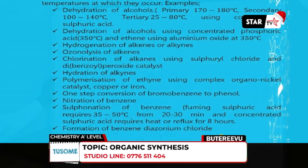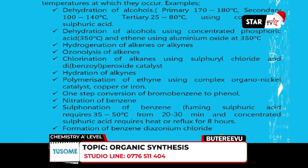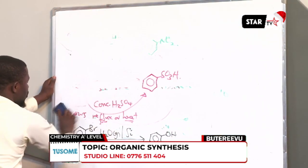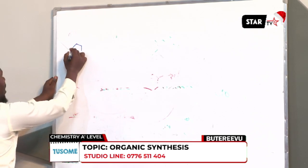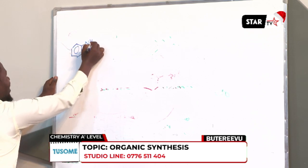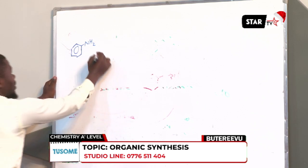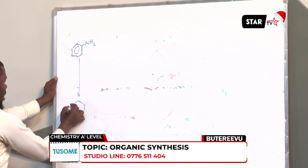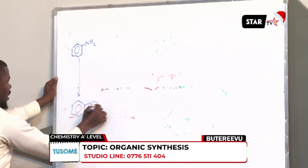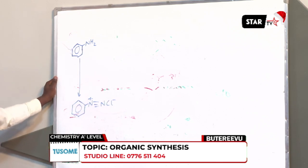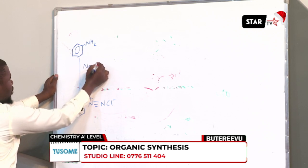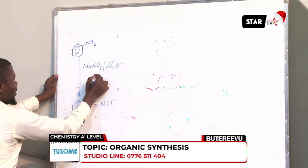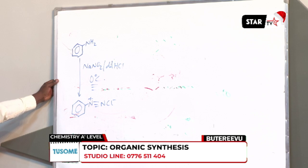The other temperature-specific reaction involves formation of benzene diazonium chloride. If you want to form benzene diazonium chloride, you will use aminobenzene — also called aniline, though the IUPAC name is aminobenzene. Benzene diazonium chloride has a negative charge on chlorine and a positive charge on nitrogen. This reaction requires sodium nitrite in the presence of dilute hydrochloric acid at zero degrees Celsius — it's a temperature-specific reaction.